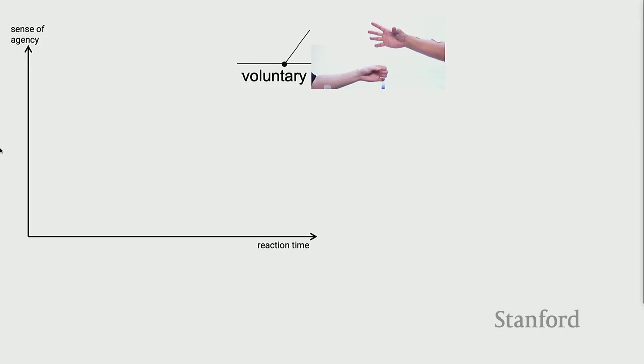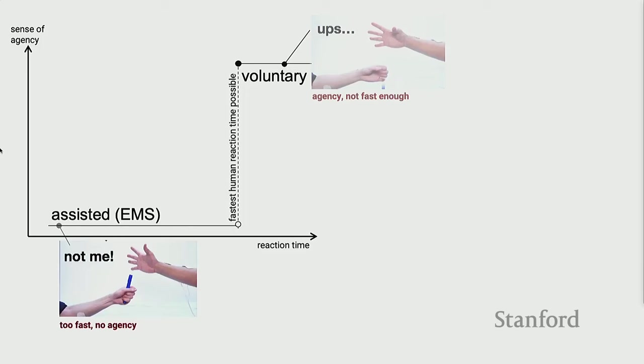On the y-axis, sense of agency; x-axis, reaction time. If you do it yourself very slowly, maximum sense of agency — you know you're doing it. Now, at your fastest reaction time, I assist you to go faster — you'd immediately report 'I didn't do it.' But my collaborators Jun and Shinichi and I asked: what if we do it a little later, and a little later? Is the sense of agency completely binary? I actually thought it was — the moment you sense something coming in a little faster than you, you should be able to tell it's not you. Turns out that's not the case.